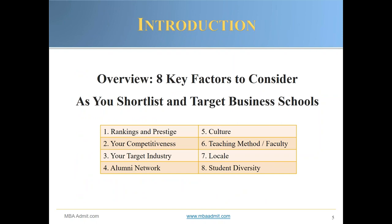The eight key factors to consider as you shortlist and target business schools — these are not ordered by importance, but are simply eight really important factors. Number one, rankings and prestige. Number two, your competitiveness. Number three, your target industry after your MBA. Number four, the alumni network. Number five, the culture of the school. Number six, the teaching method and quality of the faculty. Number seven, the locale. And number eight, student diversity.